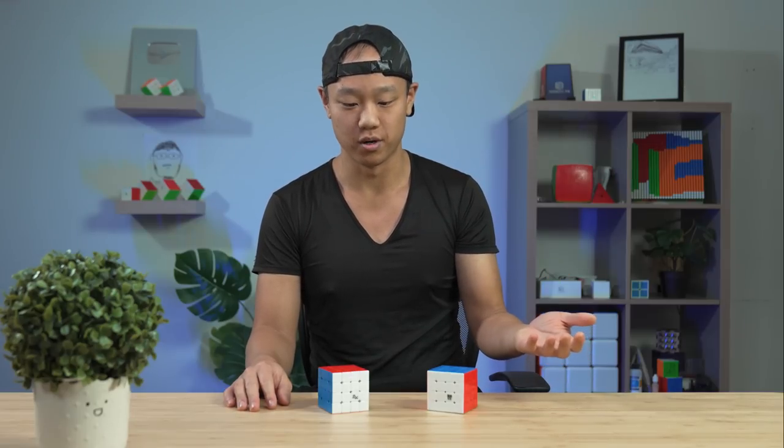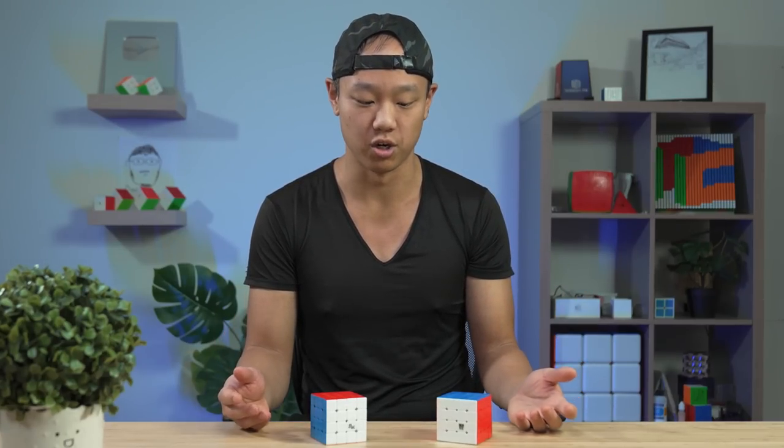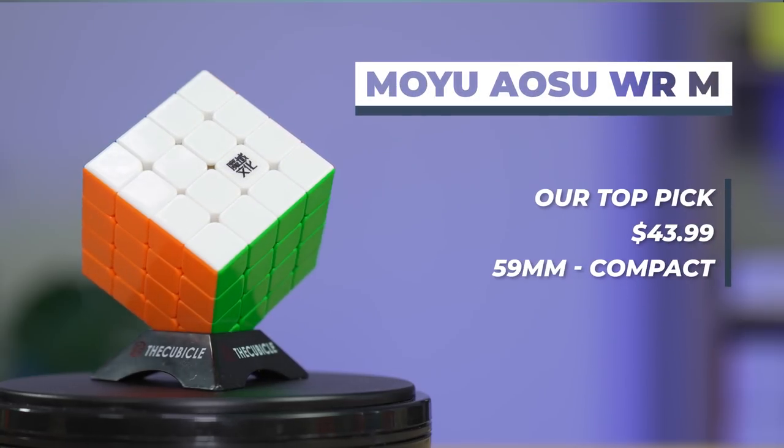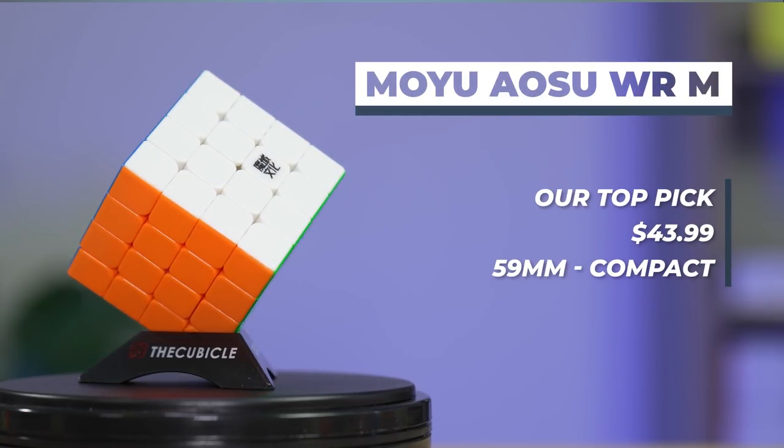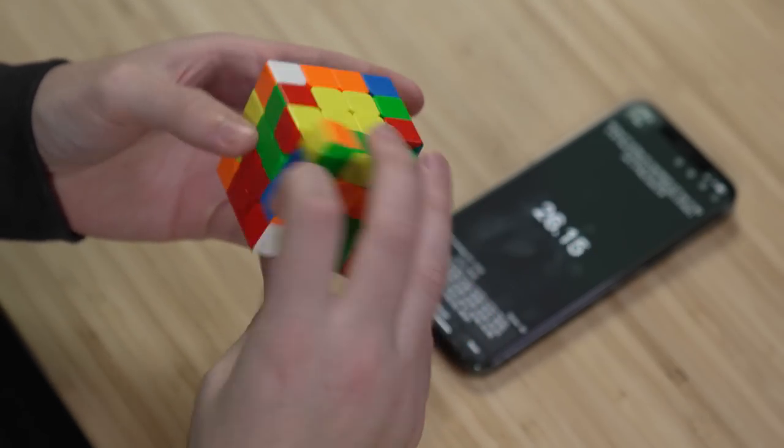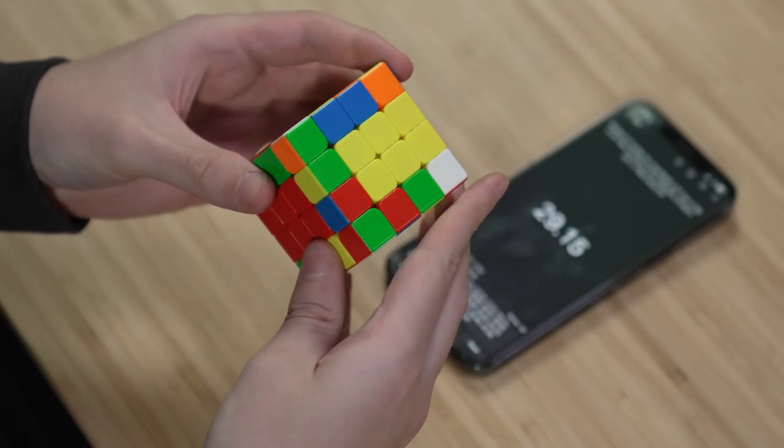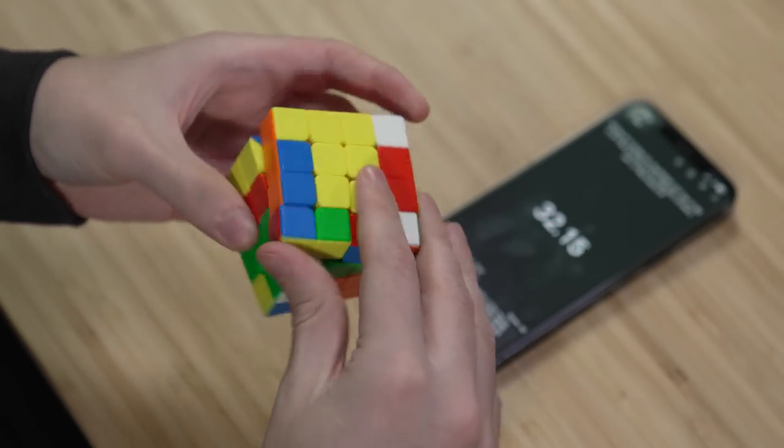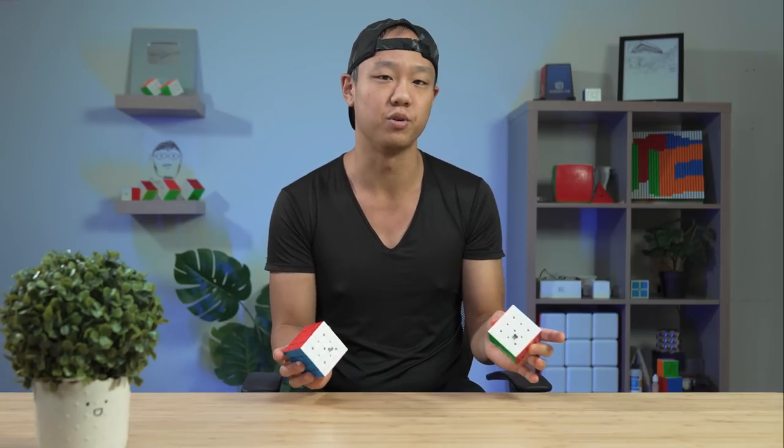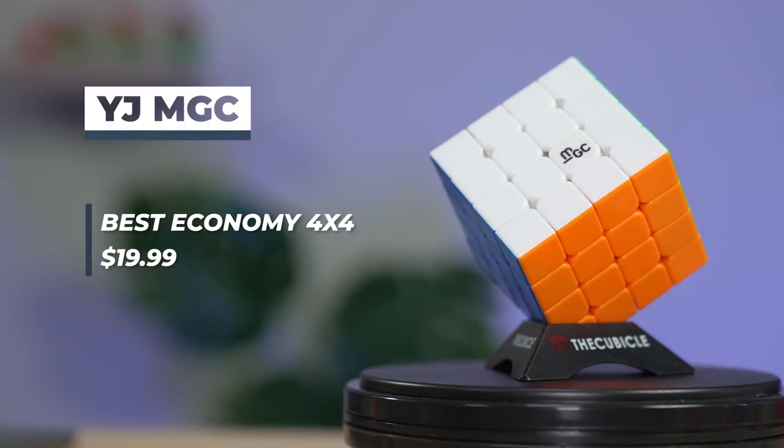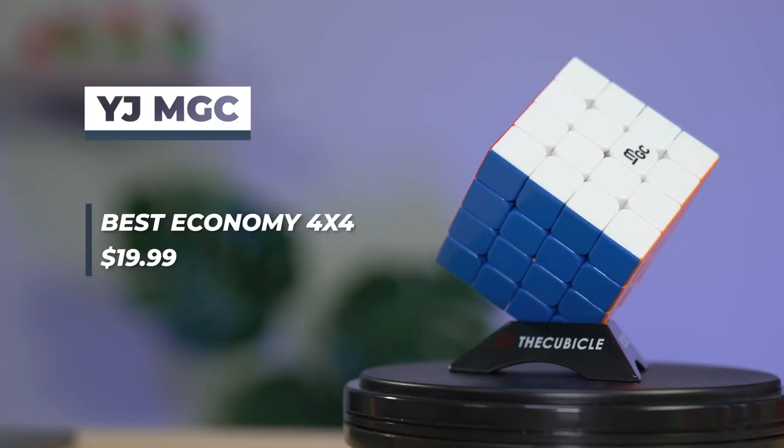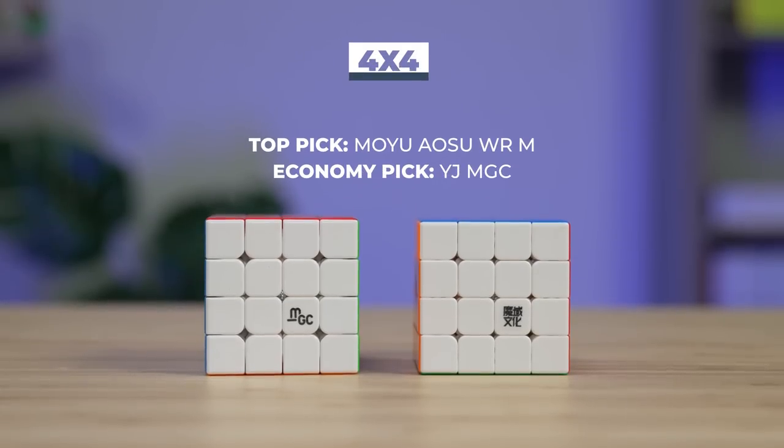Alright, moving on to 4x4. So 4x4 hardware hasn't really changed much the past year. We're still on the Alsu WRM and the MGC 4x4. So Alsu WRM is smaller, more compact, and the feel is more cohesive. So when you're turning the puzzle, you feel like the pieces are touching each other more than the MGC. The MGC feels like there's a little more open space inside of it. And when you turn it, it has a more tactile and crispy feel. It's also a little bit larger. But both of these cubes generate really good results on a world-class level. And it's up to you to figure out which one you like better. If it helps, the MGC is very affordable. The price is excellent. And it's like borderline economy, even though it's their flagship and a good performing cube. So definitely factor in the price when you pick a cube.